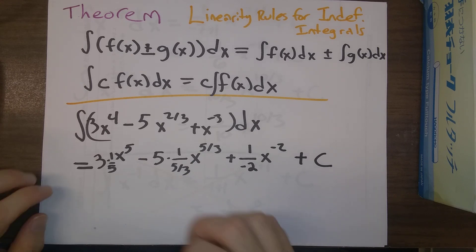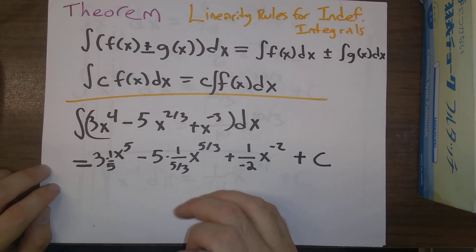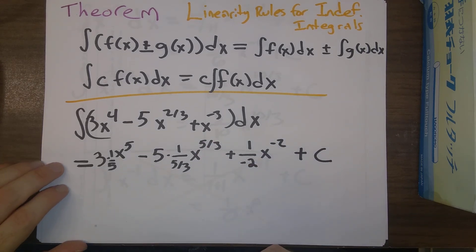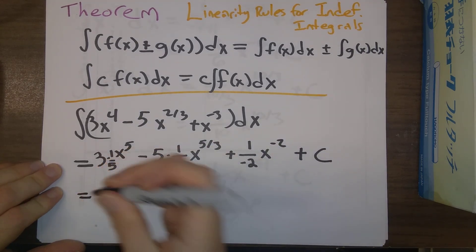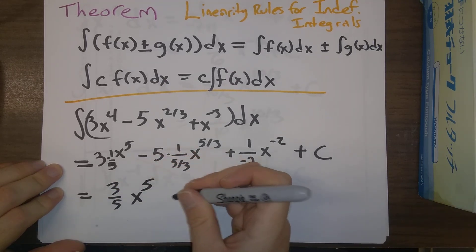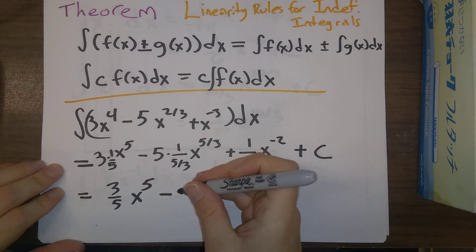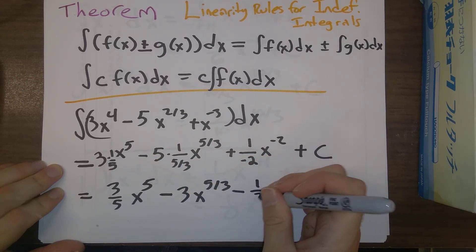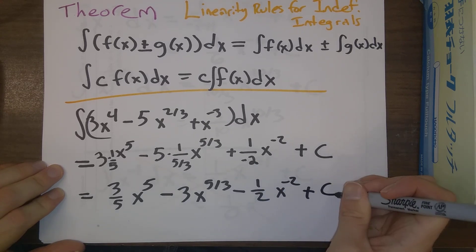By the way, you might think that we need a constant for each one of these terms. As it turns out, we have multiple constants, we can just combine it into one single constant. So we just leave it like this. So simplifying this, we end up with three-fifths x to the fifth minus that five and that five cancels, three x to the five-thirds, minus one-half x to the minus two plus c.